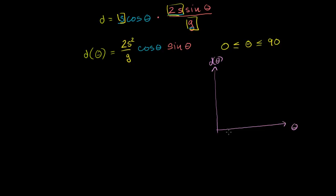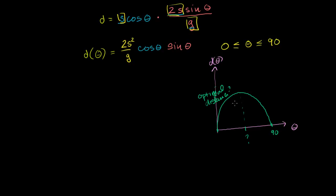We care about angles between 0 and 90 degrees. So if you were to graph this — this is 0 degrees, this is 90 degrees — the graph of this function will look something like that. What we want to do is find the angle; there's some angle here that gives us the optimal distance. And what happens to the instantaneous slope at that optimal distance? The slope there is 0.